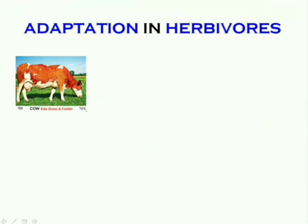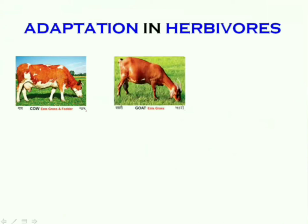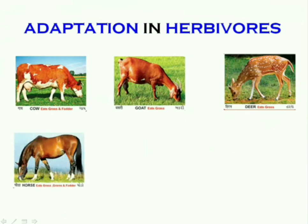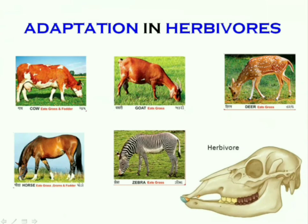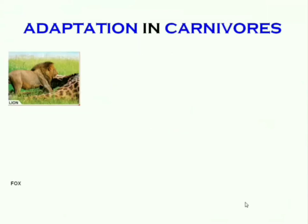Examples of herbivores are cow, goat, deer, horse, and zebra. All these animals have sharp cutting teeth in the front for cutting and flat, strong grinding teeth at the back.